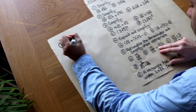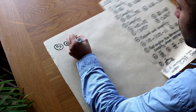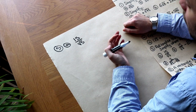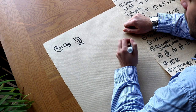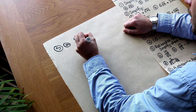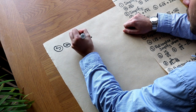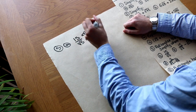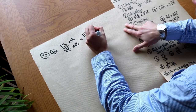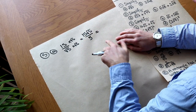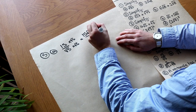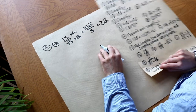For 15 over root 5, the strategy is: we can multiply top and bottom by the same thing without affecting the overall value. We multiply by root 5, so the top becomes 15 root 5, and the bottom becomes root 5 times root 5, which is 5. Then 15 divided by 5 is just 3. So the final answer is 3 root 5.